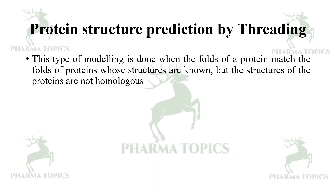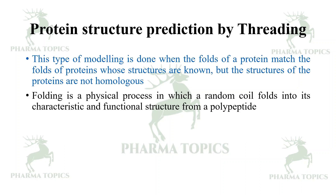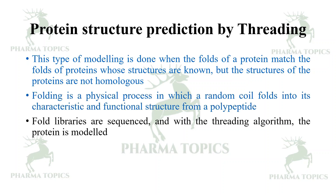This type of modeling is done when the folds of the proteins match with the folds of proteins whose structures are known, but the structures of the proteins are not homologous. Folding is a physical process in which a random coil folds into its characteristic and functional structure from a polypeptide. Fold libraries are sequenced and with the threading — or stitching — algorithm, the protein is modeled.